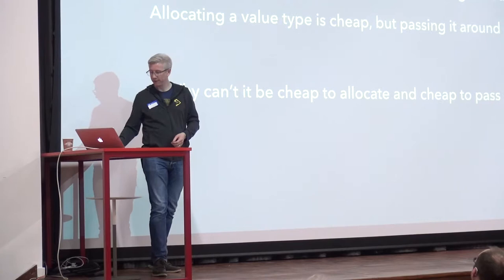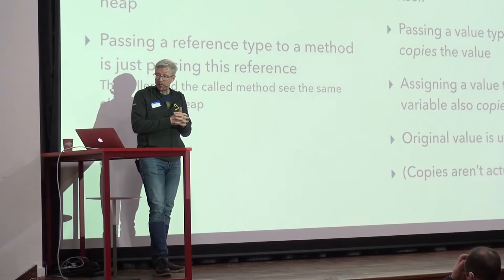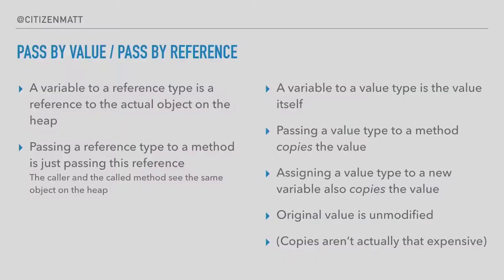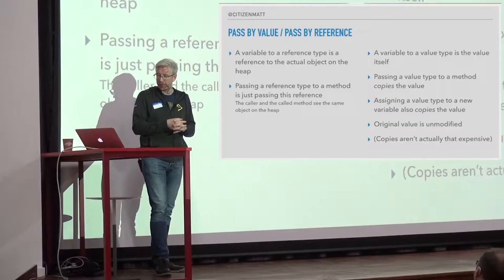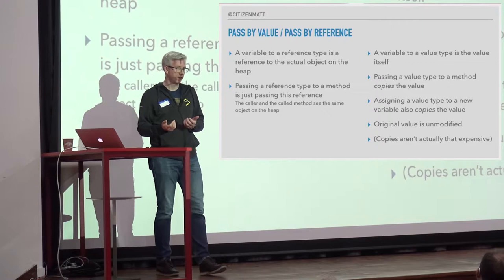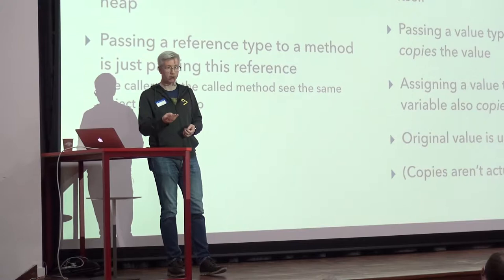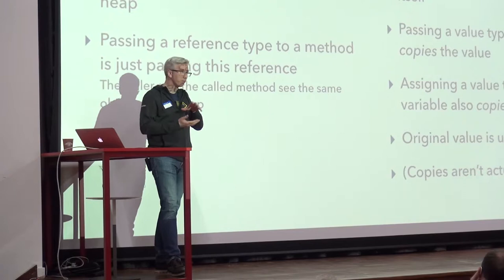Passing by value or passing by reference. The copies when you have a value type aren't actually all that expensive — there is a cost but it's not massive. A 3D point might have three floats, about 24 bytes. It's not a big deal that these things get copied around, but the only thing better than allocating 24 bytes is allocating no bytes. So if you are in a tight loop doing lots of allocations, even a small amount, we can improve that by not copying anything around.